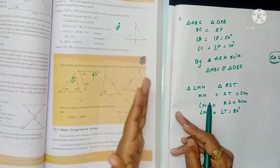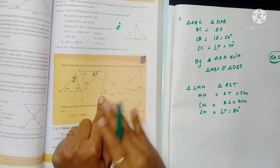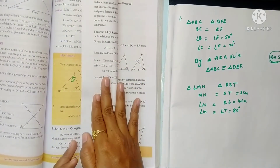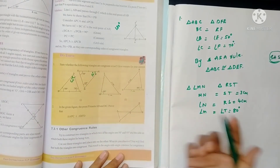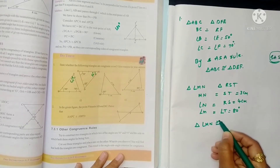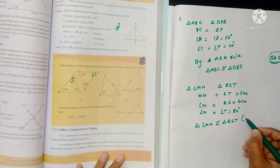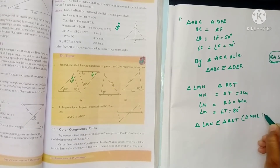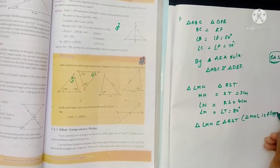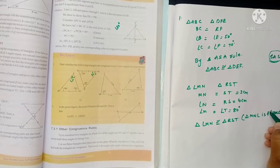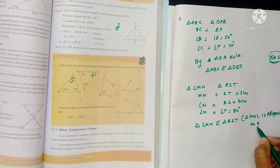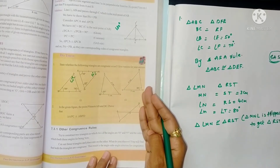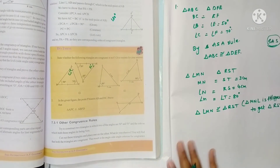If you flip triangle RST and reverse it, these two triangles become congruent. So triangle LMN is congruent to triangle RST because triangle RST is flipped to get triangle LMN. That is the reason for congruence here.